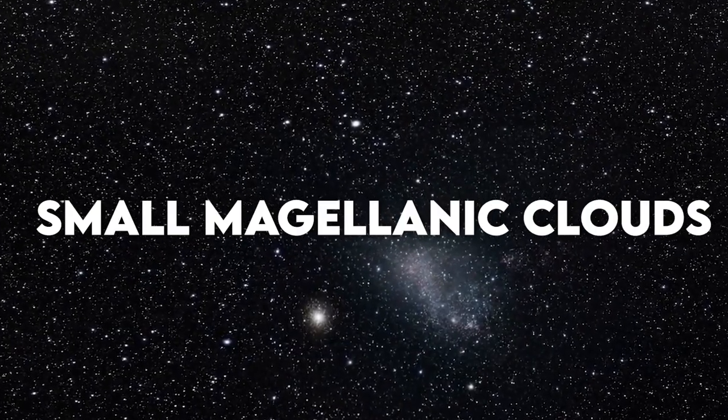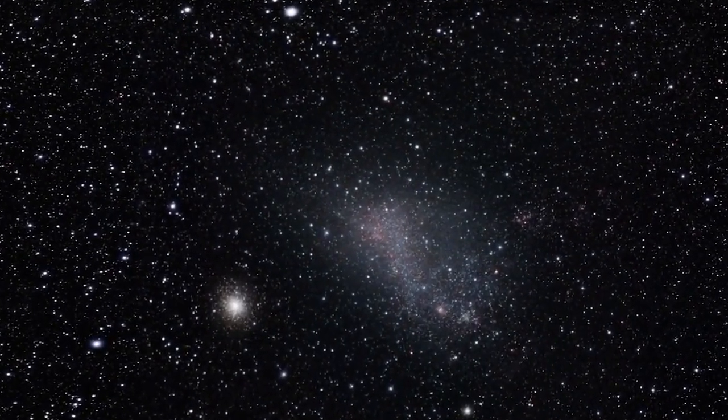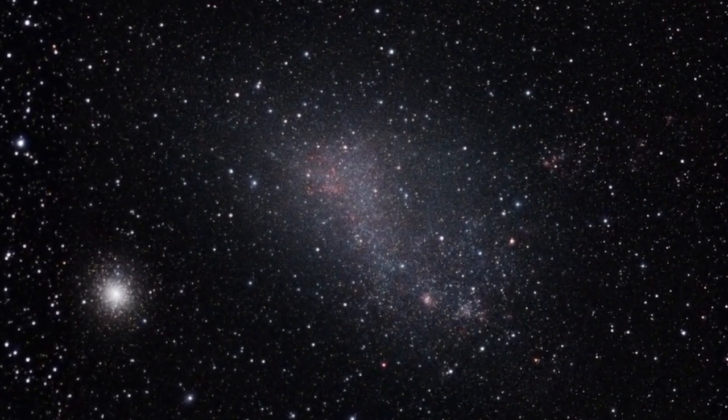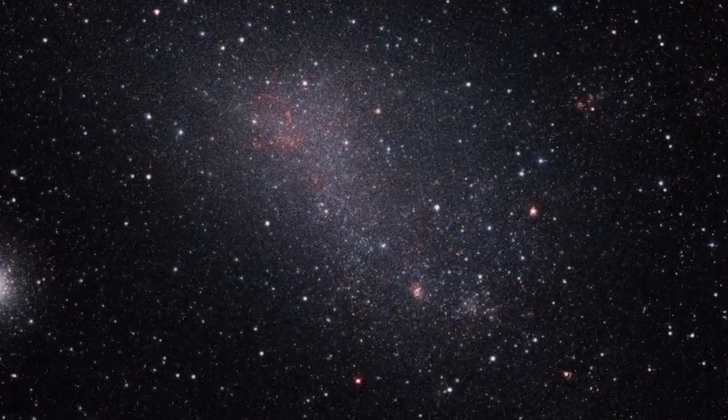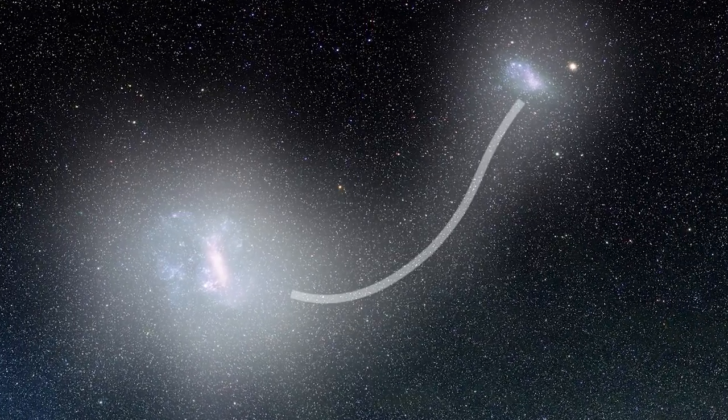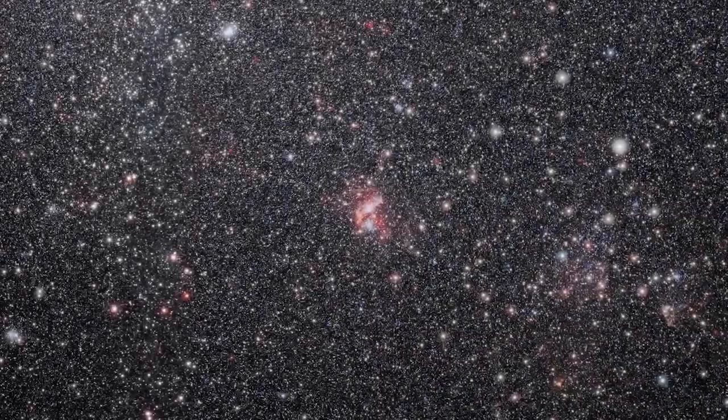Small Magellanic Clouds. The Small Magellanic Cloud (SMC) is a fascinating dwarf irregular galaxy that lies in the southern hemisphere of the sky, predominantly within the constellation Tucana. Positioned approximately 200,000 light-years away from our own Milky Way galaxy, the SMC is one of our closest galactic neighbors.